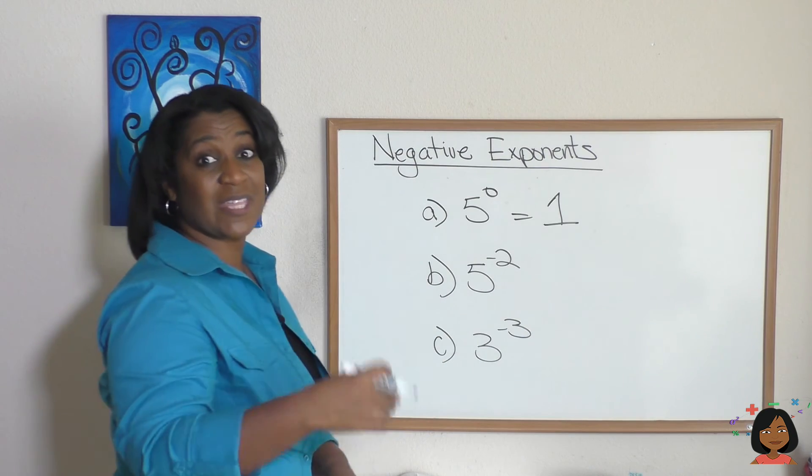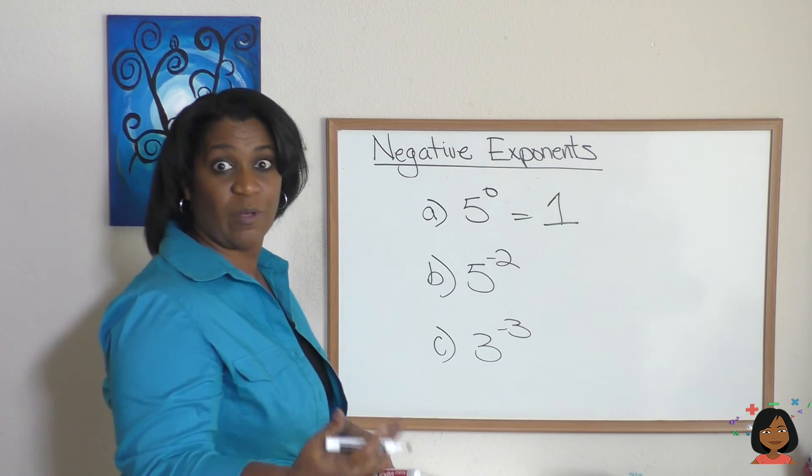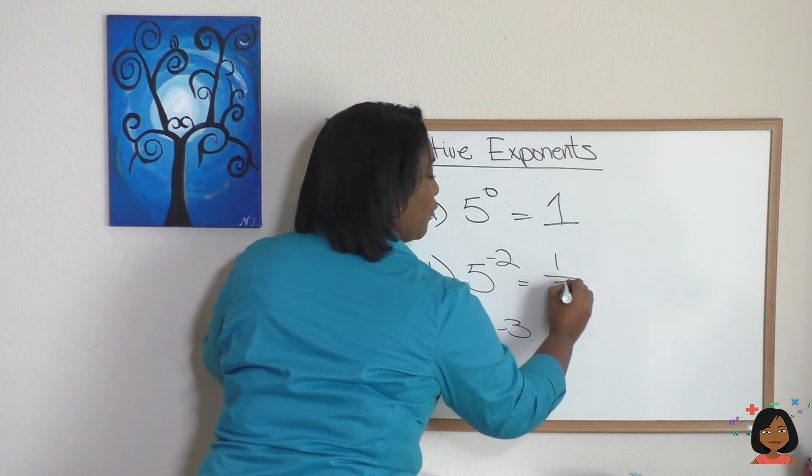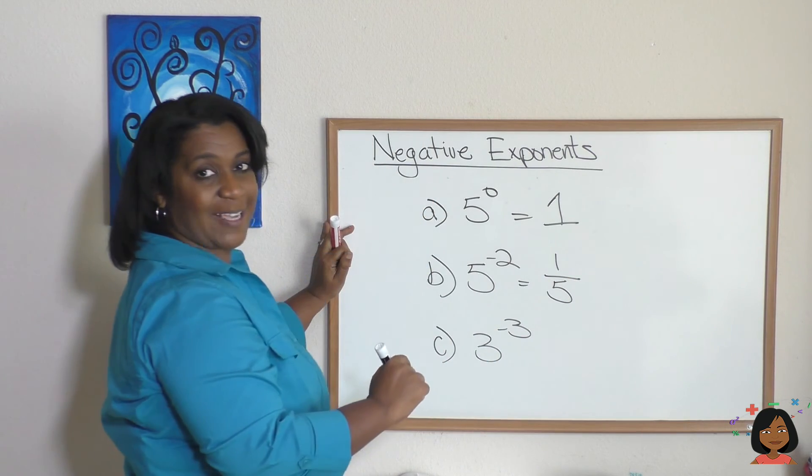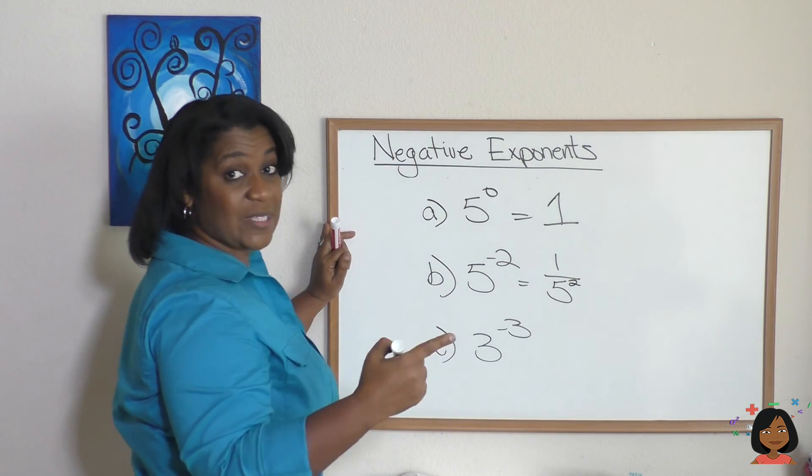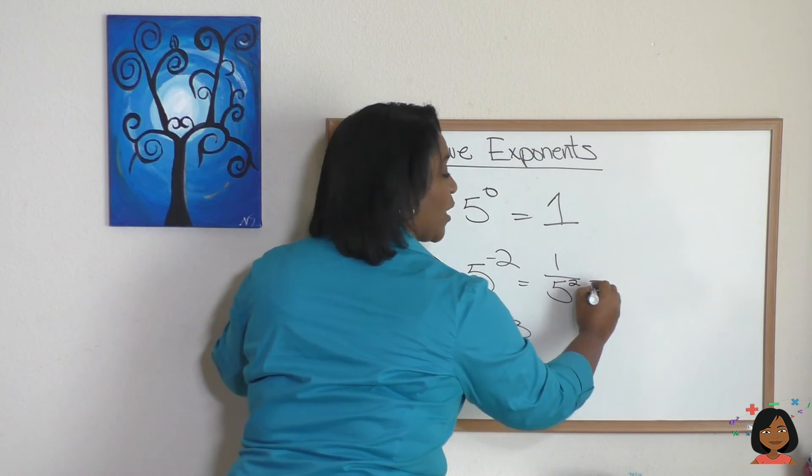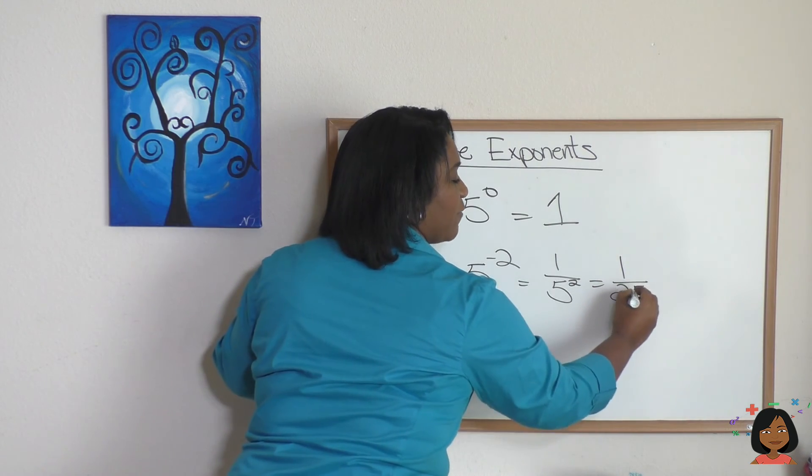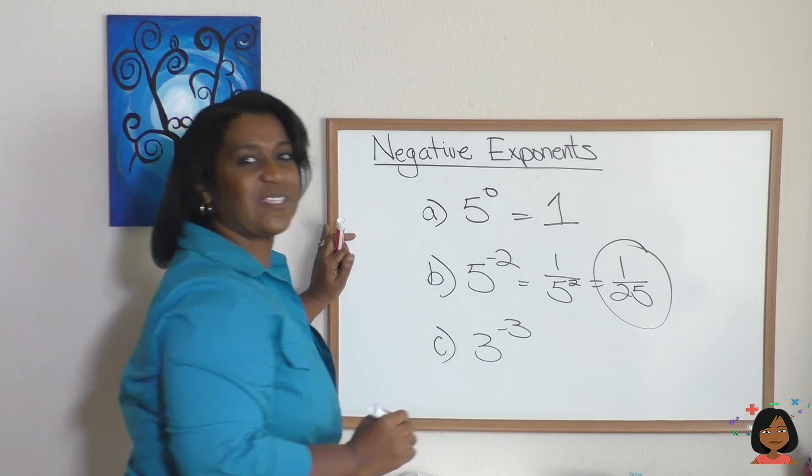Okay. 5 to the negative 2 power. Well, the rule is, let's get the reciprocal. So it's 1 over 5, and we keep our exponent, but we drop the negative. It'll be 5 squared. And we can simplify 1 over 5 squared to 1 over 25. 1 25th is our answer.